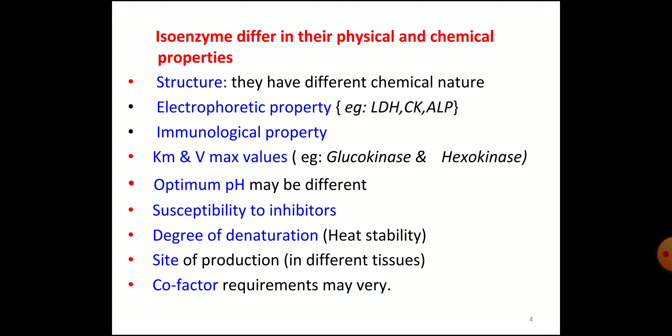The site of production may differ — isoenzymes may be produced from different tissues like brain, heart, liver, etc. Cofactor requirement may also differ; enzymes require cofactors like coenzymes in various reactions, and each isoenzyme may have a different cofactor. These are the physical and chemical properties by which isoenzymes are differentiated.